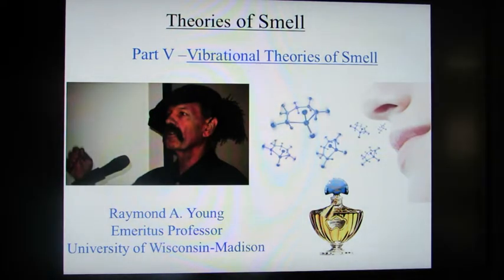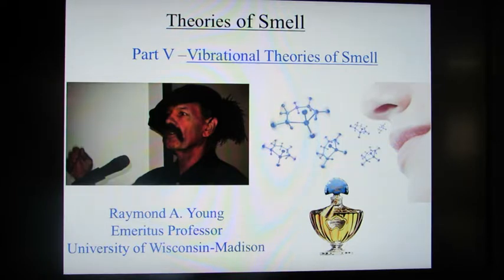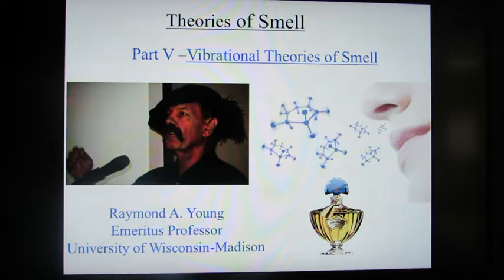Last time we talked about the molecular structure theory of smell, and we noted some problems with this theory. For example, the musk smell is given off by a wide variety of molecules of different structure, from elaborate ring structures to the nitro musks. Also, the almond smell is produced by benzaldehyde as well as cyanide — two very distinct structures.